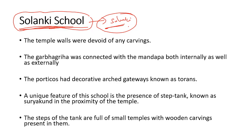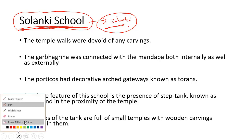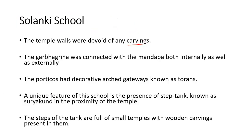One unique feature of the Solanki school is that the temple walls are completely plain — there are no carvings on the walls. In contrast, the Odisha school had carvings on exterior walls, and the Khajuraho school had carvings on both interior and exterior walls. In the Solanki school, the Garbhagraha is connected to the Mandapa both internally and externally, meaning people can access the Garbhagraha from outside the temple complex as well as through the Mandapa.